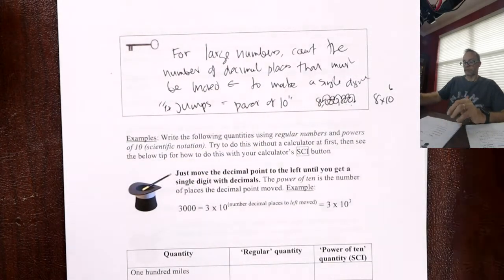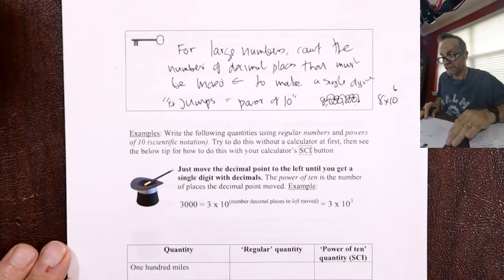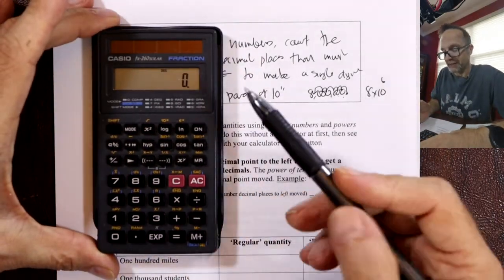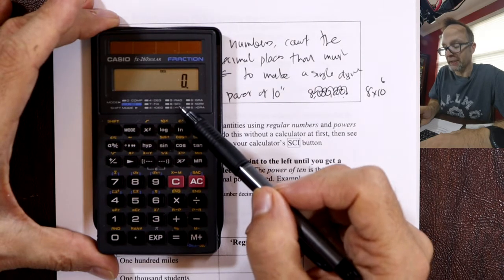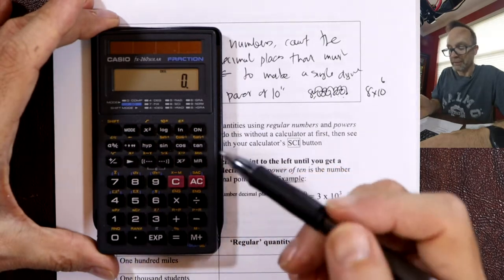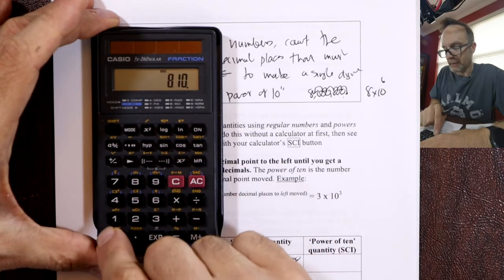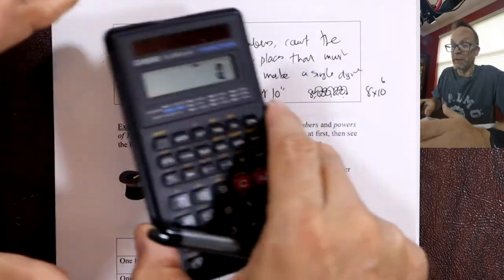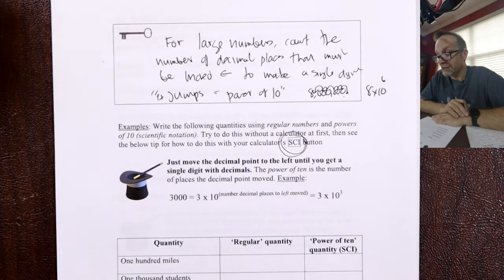Jumping the decimal point is a manual way to do it, but there is a special button on calculators — a get-out-of-jail-free button. There's something called SCI mode. You can put it into scientific notation mode. Most calculators actually have an SCI button. If you just press it, it puts the calculator in scientific notation mode and expresses these numbers automatically.